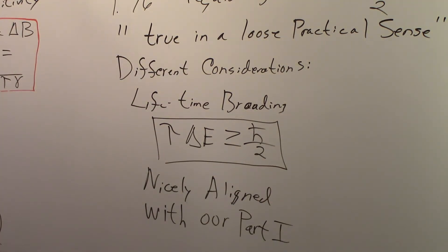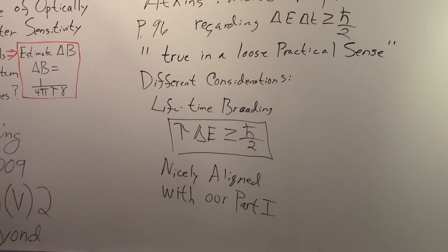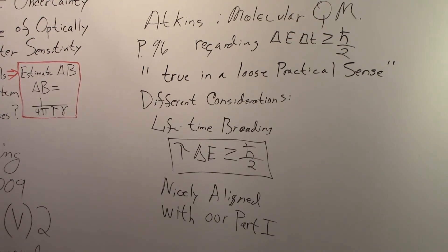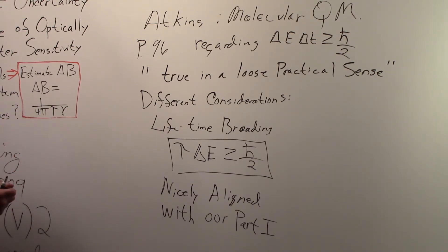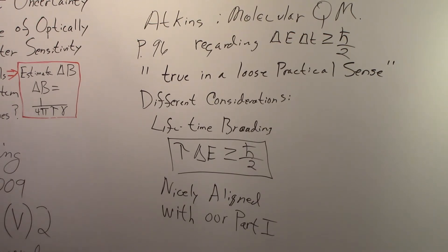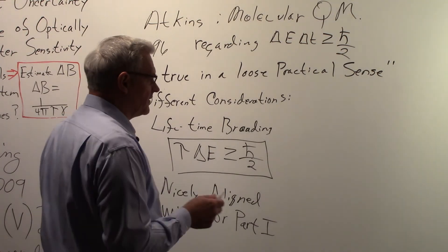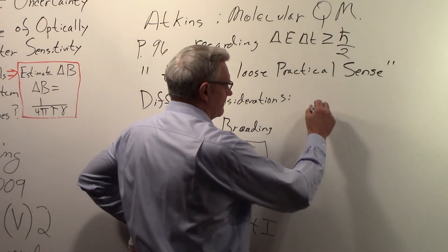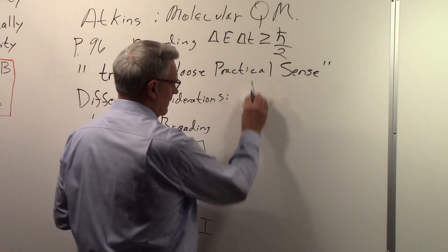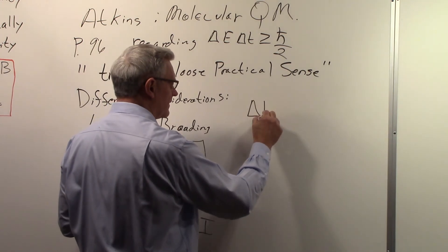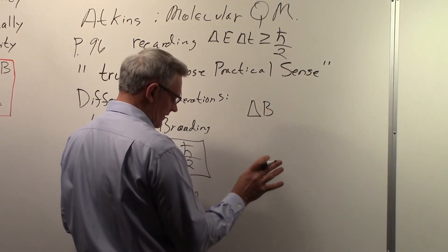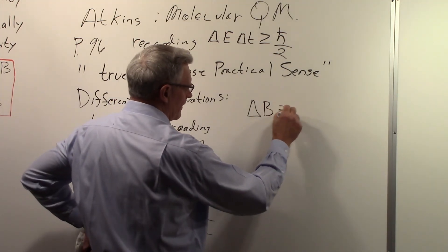So these different lines of reasoning — the wave packet derivation showing ΔE · Δt ≥ ℏ/2, Noether's theorem, the Casimir effect with two plates separated by 10 nanometers producing one atmosphere of pressure, and what Atkins does — all make it seem very reasonable to use ΔE · Δt. Going back to part one, the magnetometer sensitivity was ΔB ≥ 1/(4π · γ · τ).